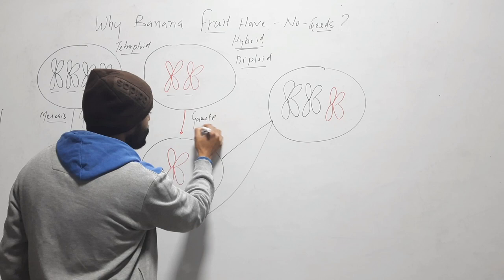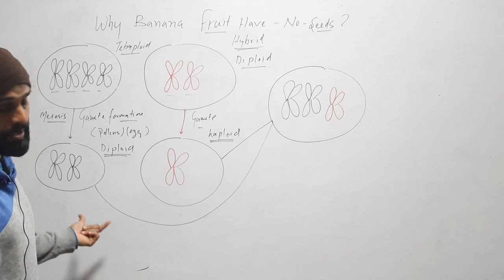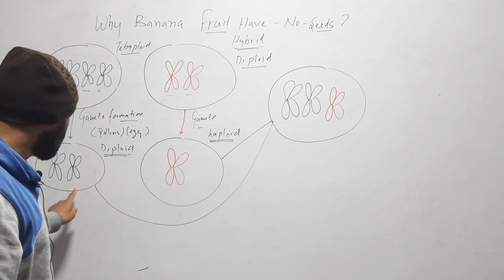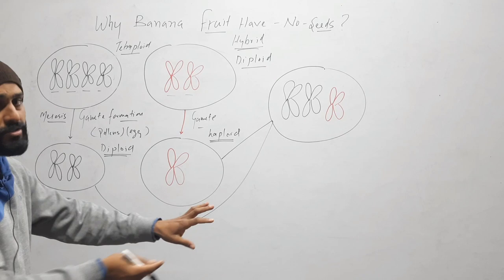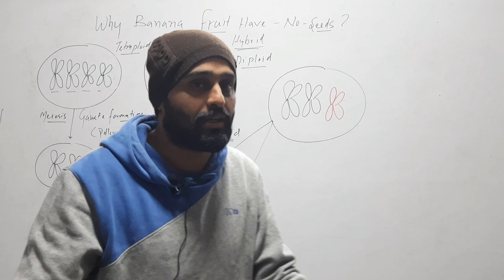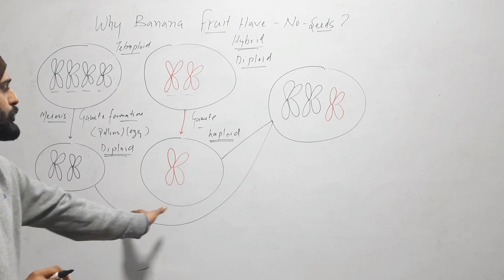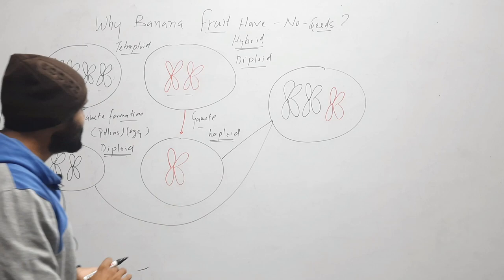When these gametes fuse during hybridization, it may be egg or pollen from either parent — a reciprocal cross is also possible and does not have any different effect. So when the diploid gamete and the haploid gamete fuse, we get a zygote.